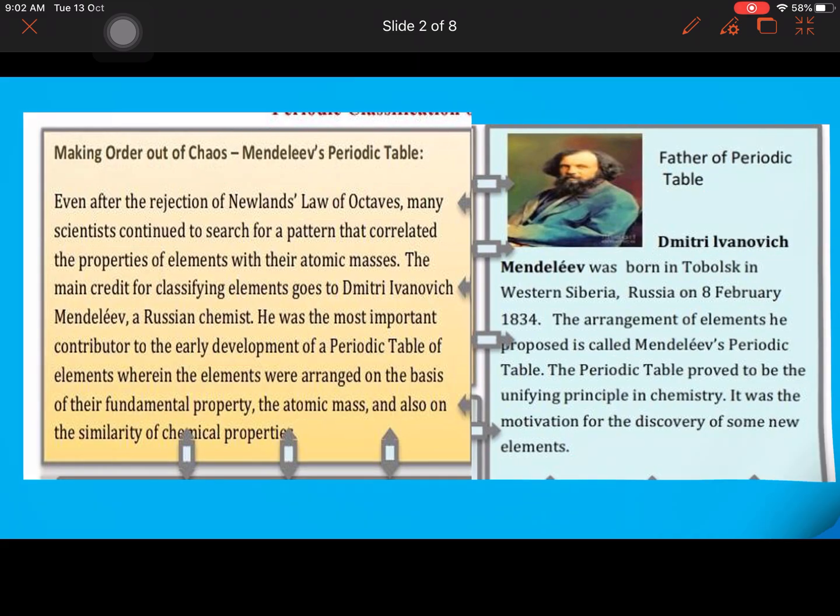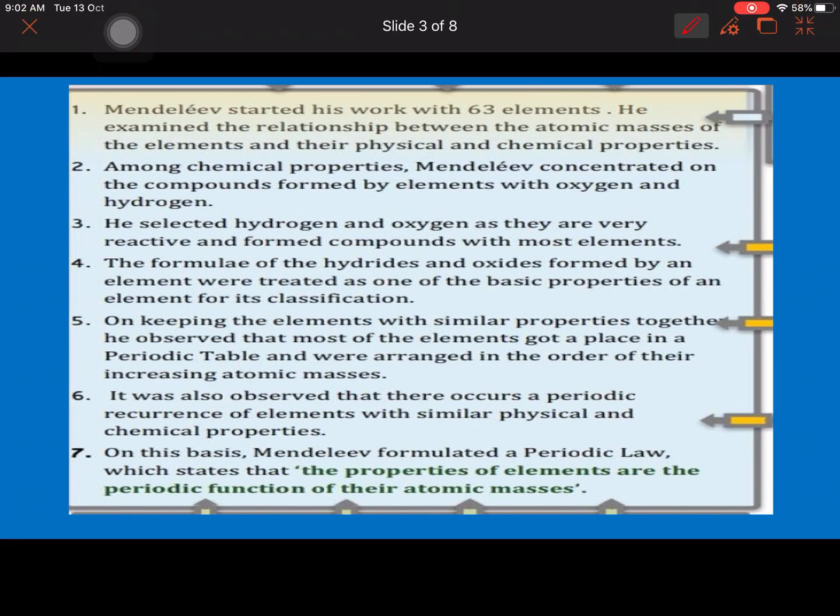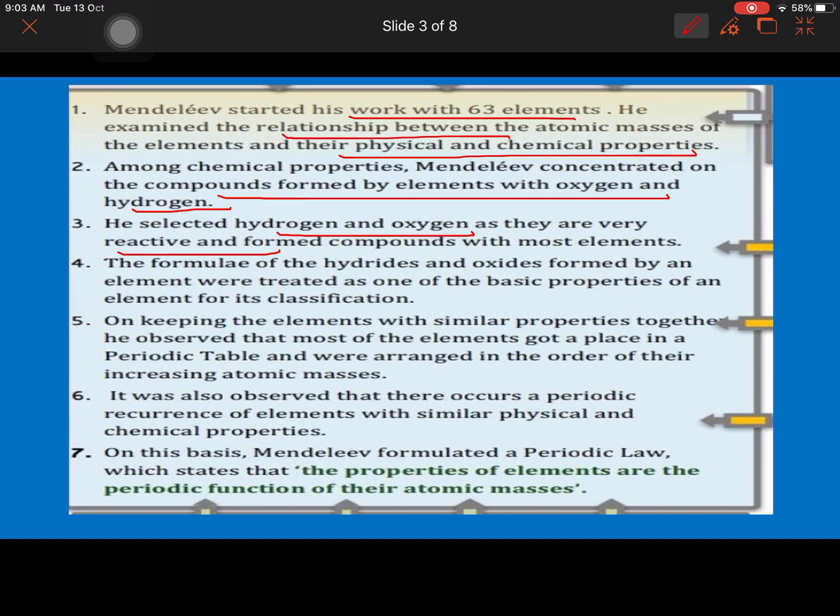Firstly, Mendeleev started his work with 63 elements and he examined the relationship between the atomic mass of elements and their physical and chemical properties. Among chemical properties, Mendeleev concentrated on compounds formed by elements with oxygen and hydrogen. So he reacted every element with oxygen and hydrogen and observed the pattern of oxide formation and hydride formation. On this basis, he kept one element below the other. Why he selected hydrogen and oxygen? Because these two are very reactive elements and they can react with most of the elements, and he used the formula of hydrides and oxides formed by the reaction as a basis for classification.